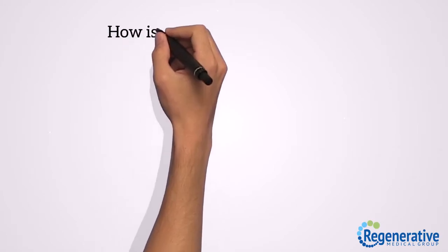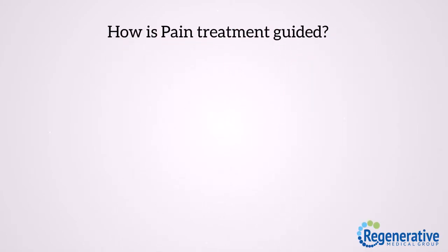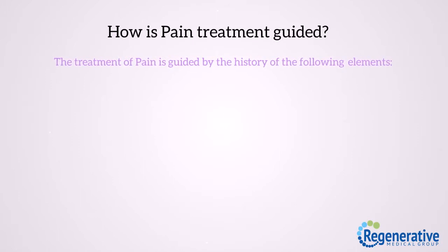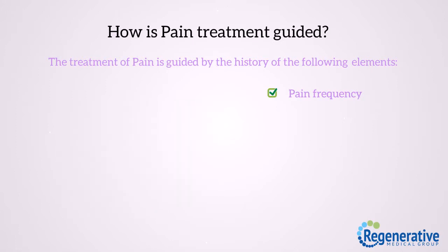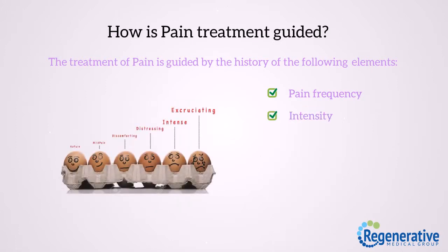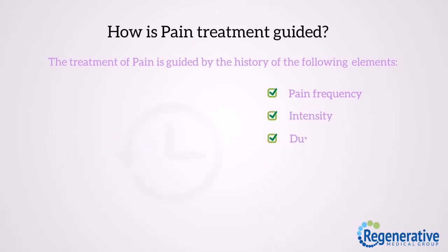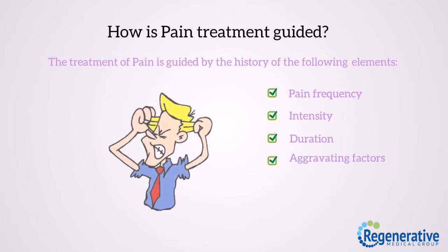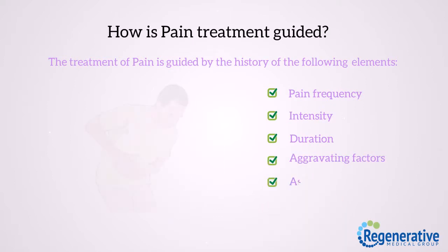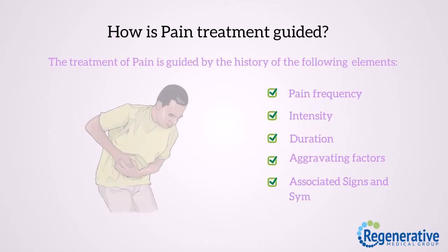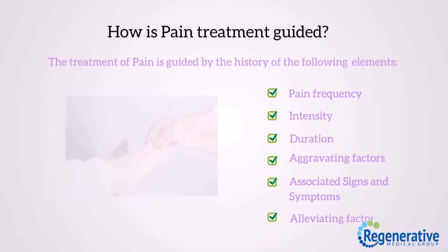How is pain treatment guided? The treatment of pain is guided by the history of the following elements: pain frequency, intensity, duration, aggravating factors, associated signs and symptoms, and elevating factors.